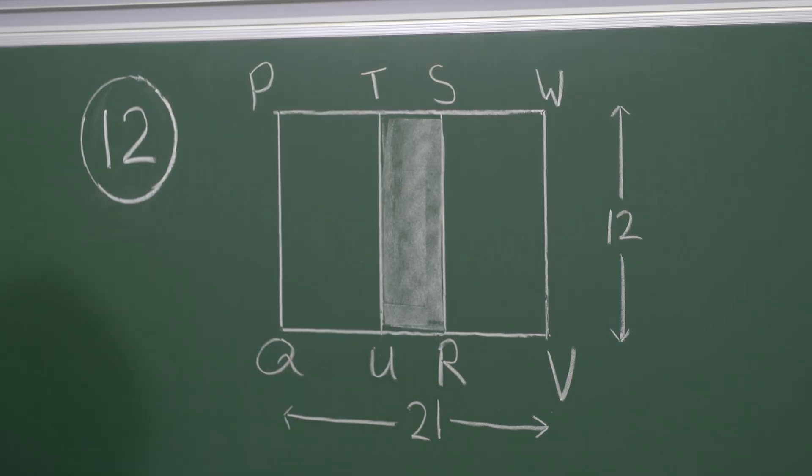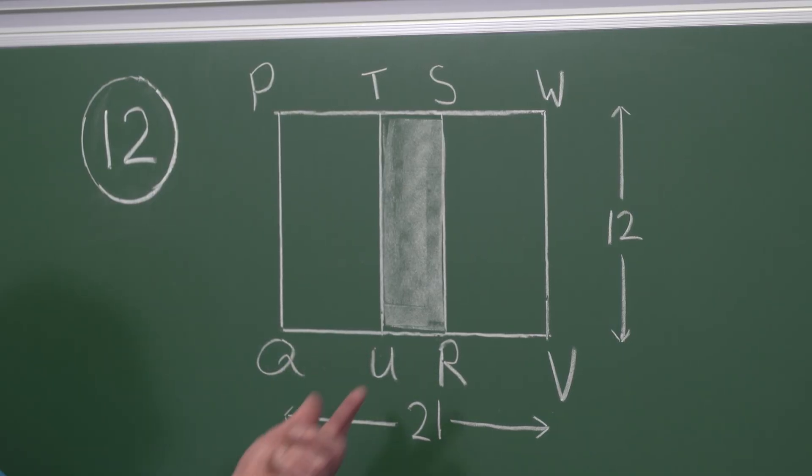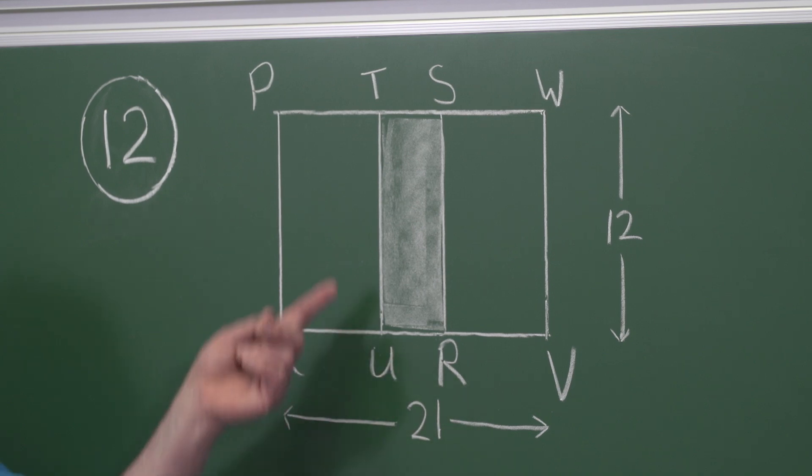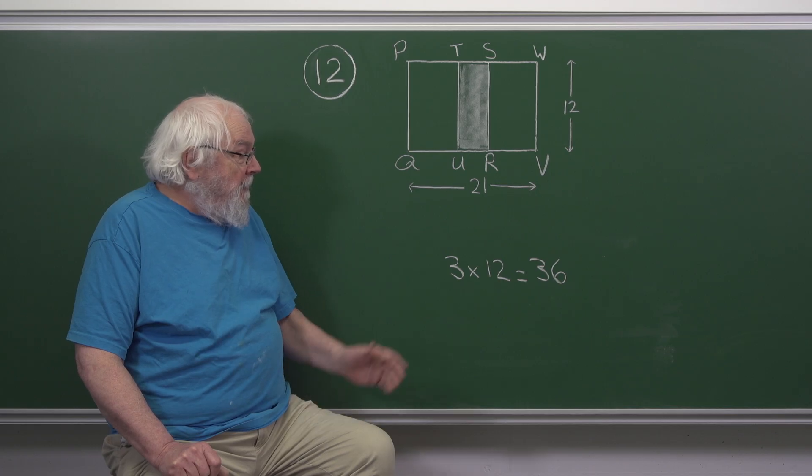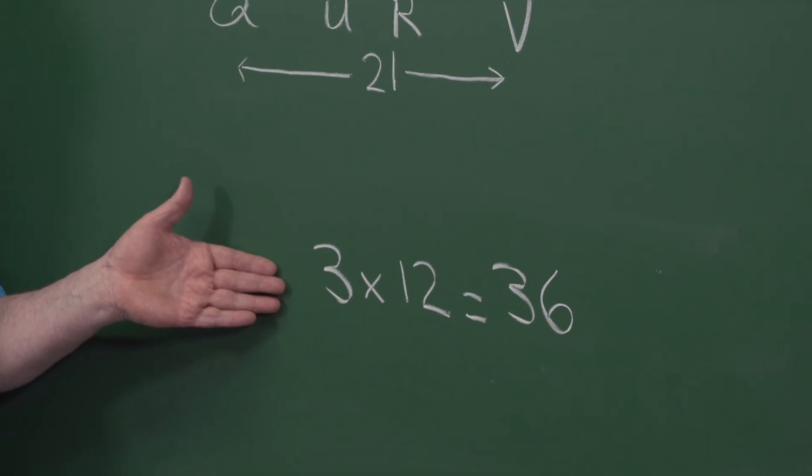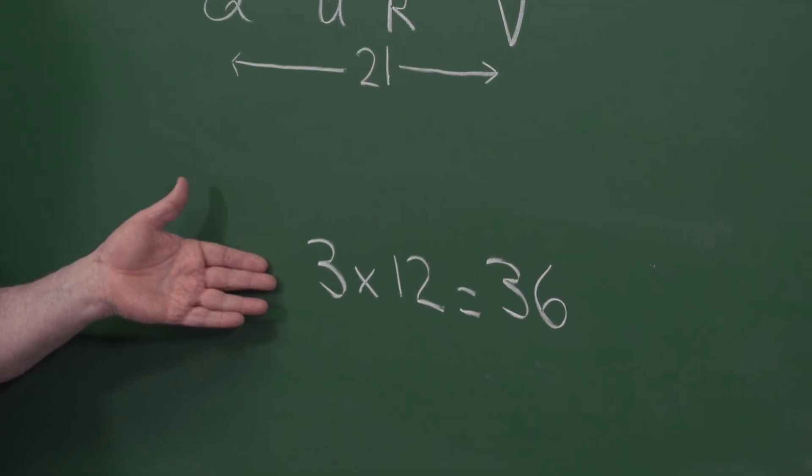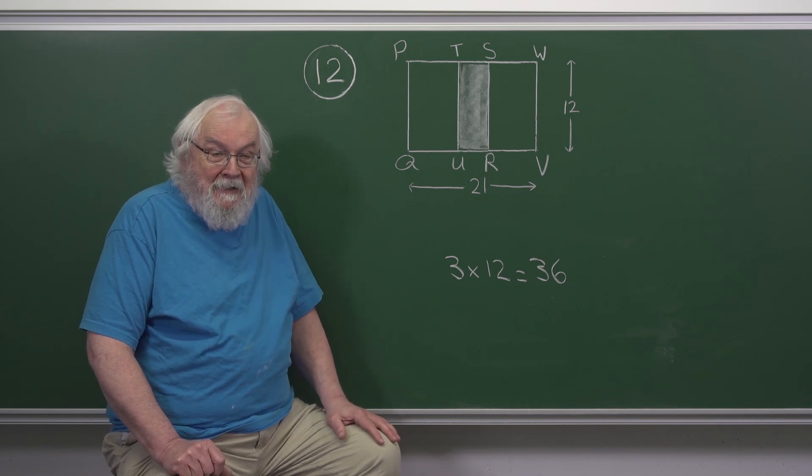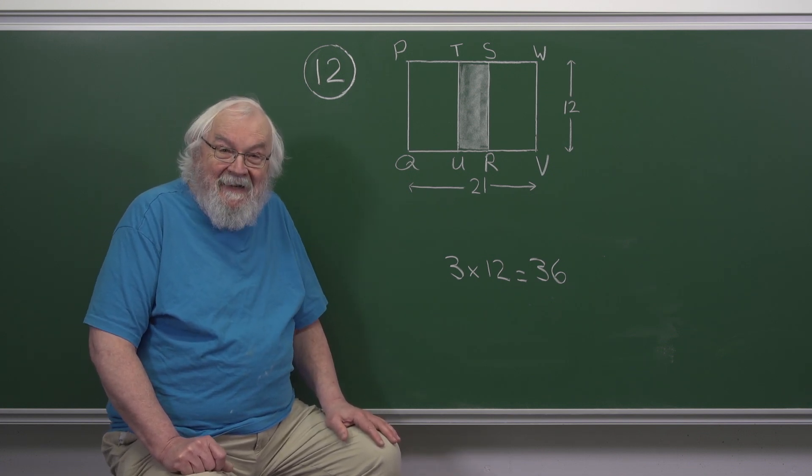So if we look at this shaded region in the middle, its width is 3, its height is 12, and so we calculate its area is 3 times 12 is 36. If you want to put it with units, 36 square centimeters, and so we choose option B.